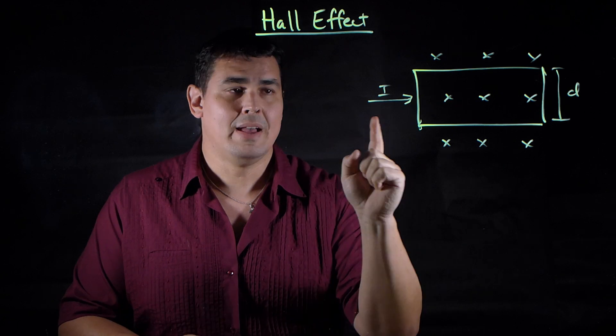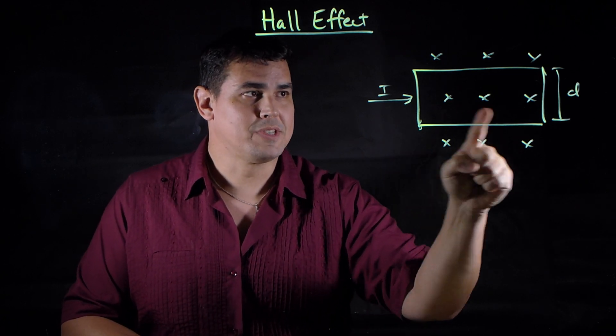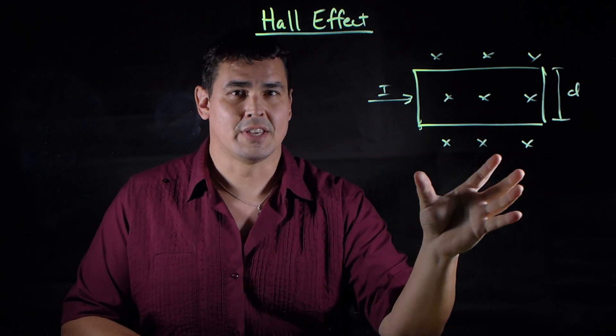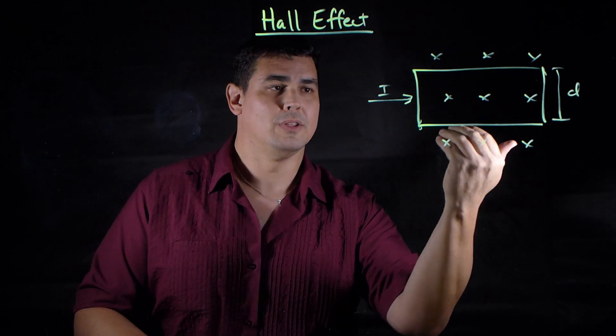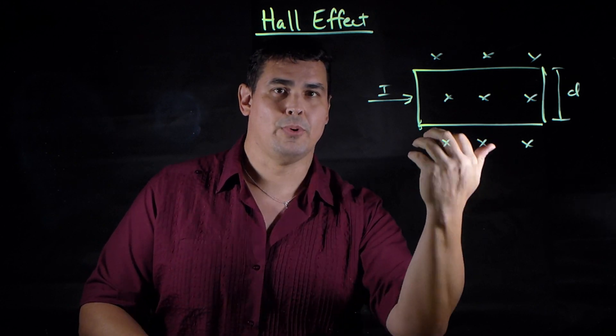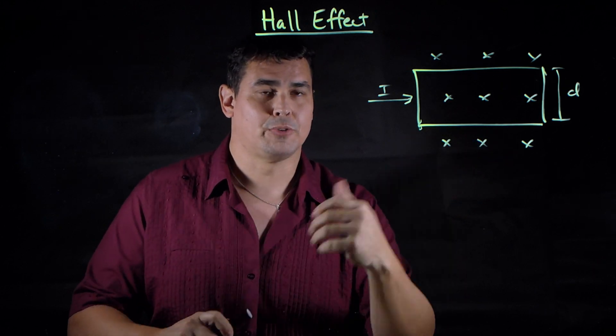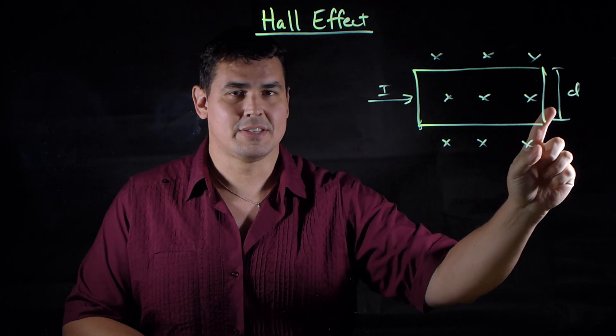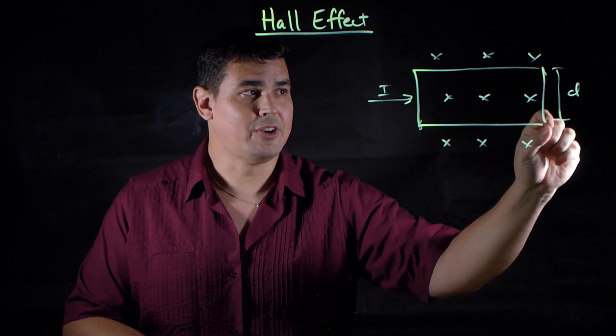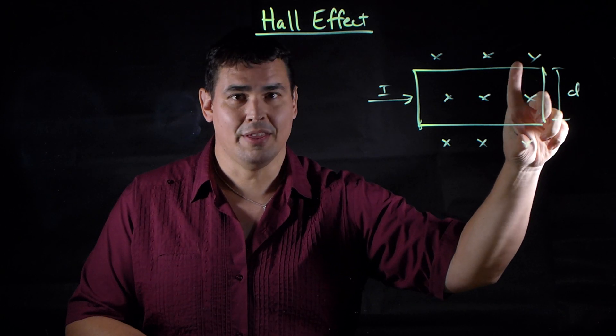I have a current and it's going to go through this conductor. This conductor is in a magnetic field where the field lines are pointing into the page from your perspective. And this conductor has a width d.